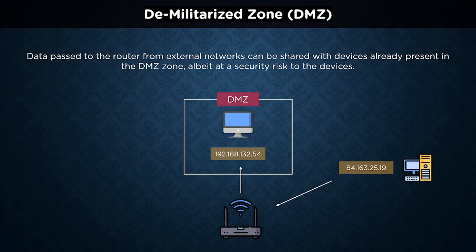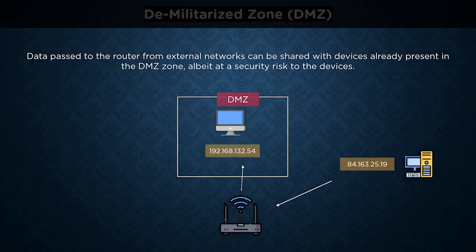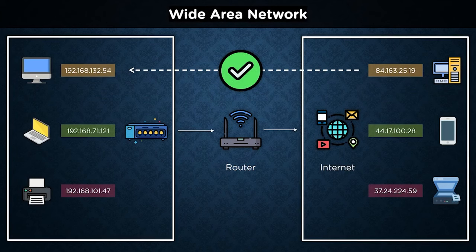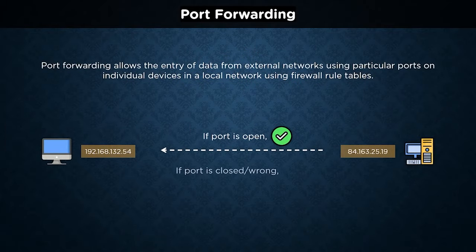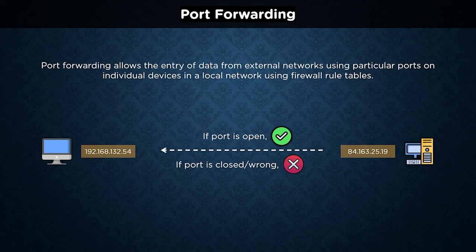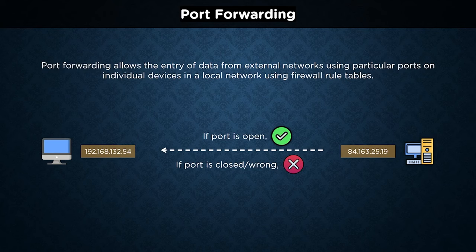However, since external data can reach devices in a DMZ subnet without any firewall checks, the security risks associated with this method are very large compared to the second option: port forwarding. Port forwarding is a method of granting external devices access to computers on private networks by translating an external IP address and port to an internal IP address and port. All devices communicate using their IP addresses and specific ports — for example, the TCP/IP protocol for basic internet usage uses port 80. Additional firewall rules can open specific ports for external devices to communicate with, allowing direct communication without hindrance if the designated ports are open.